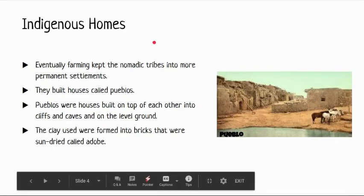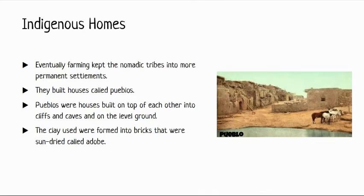The indigenous peoples were nomadic, but eventually they learned farming techniques, which allowed them to build more permanent settlements. Because they were staying longer, they could invest in more durable materials. They built permanent structures called pueblos — think of them as early apartments. These were multi-level structures with ladders leading to upper entrances, essentially stacked living situations.